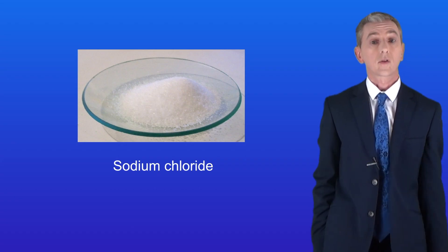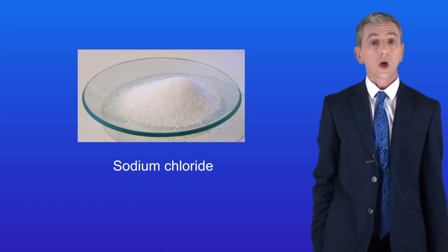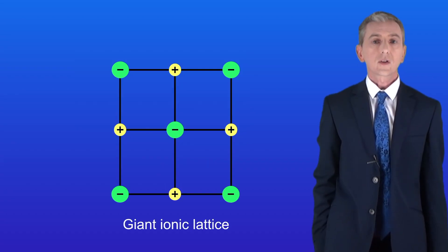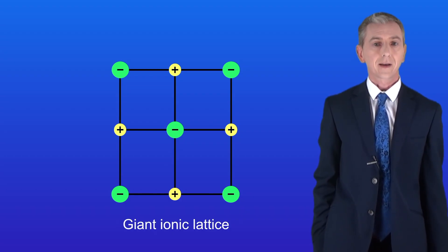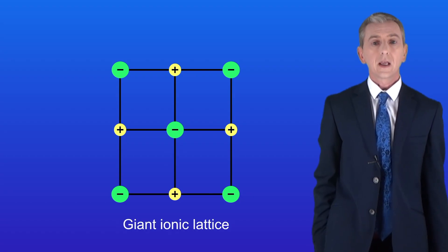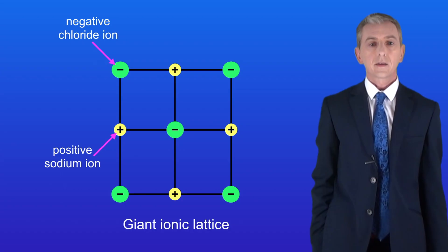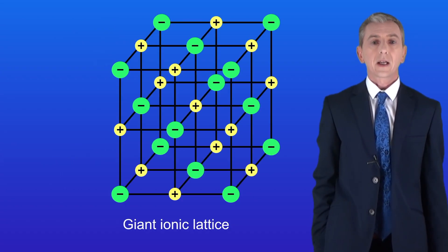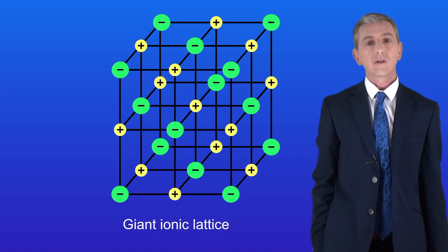Sodium chloride is a crystal and in fact many ionic compounds form crystals like this. In this video we're looking at how the ions are arranged in a crystal and how this determines their properties. The first key fact is that ionic compounds form giant structures where every positive ion is surrounded by negative ions and vice versa. I'm showing you that here for sodium chloride — positive sodium ions surrounded by negative chloride ions. Scientists call this a giant ionic lattice, which is three-dimensional.